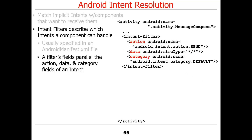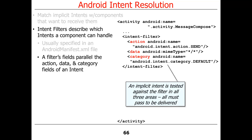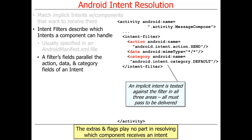The fields in the filter parallel the fields in the intent. This particular filter has an action of action send, data specified as a MIME type for any type of data, and the default category. An implicit intent — one created with no name — is tested against the filter in all of these areas, and they all have to pass for the activity to be considered a candidate for handling the intent. Extras and flags don't play any part in resolving which component receives an intent — just these three fields are used.